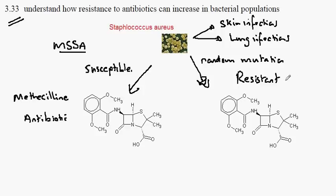We can summarize that into a type of bacteria known as Methicillin-resistant Staphylococcus aureus. The mutation has created genes in Staphylococcus aureus which, when expressed, allow it to break down the antibiotic so that it resists it and doesn't die.